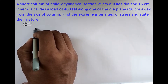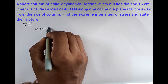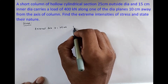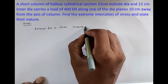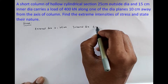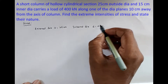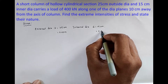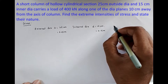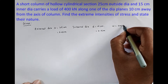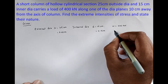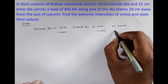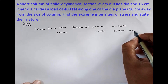The given values are: external diameter D = 25 cm (0.25 m), internal diameter d = 15 cm (0.15 m), load W = 400 kN, and eccentricity E = 10 cm (0.1 m), since the load is applied 10 cm away from the axis of the column.